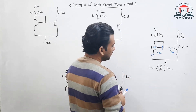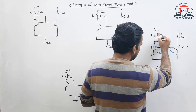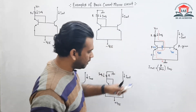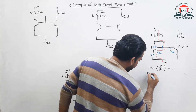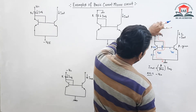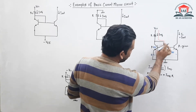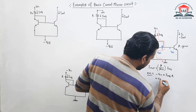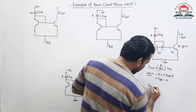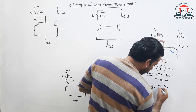Now let us apply KVL to find the value of I reference. We apply KVL in this loop shown by the red line. Applying KVL in the red loop gives: minus VCC, plus I reference into R, plus VBE, equals zero. From this equation we can find the value of I reference.